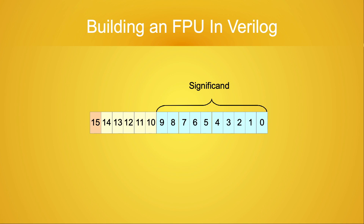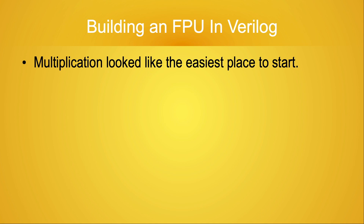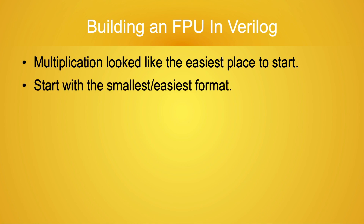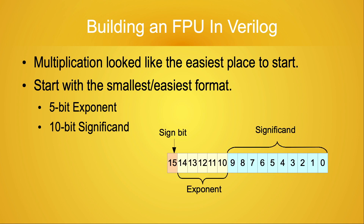Finally, we have the significand field. For normal numbers and sub-normal numbers, this field contains the value which gets scaled by the exponent. The IEEE standard specifies a collection of operations which need to be supported. I wanted to start with something easy, and it appeared to me that the easiest arithmetic operation to implement for floating-point numbers is multiplication. For the 16-bit floating-point format, also known as half-precision, the exponent field is 5-bits wide and the significand field is 10-bits wide. Adding in the sign bit brings us to the 16-bit total for this format.